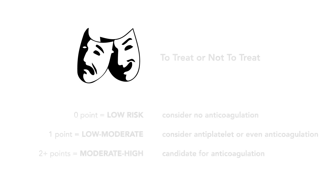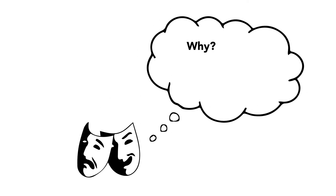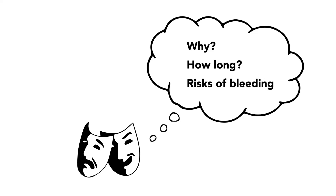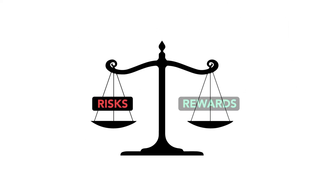Of course, we should factor in things such as why this patient has atrial fibrillation, how long they've had atrial fibrillation, and the risk for bleeding if they were to start anticoagulation therapy. The score is not the be-all and end-all for medical decision making, but it provides a nice foundation for where you will start thinking about potential treatment options for your patient.